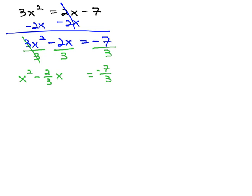Now, we're all set up to complete the square, and the way we complete the square is we have to find half of b and square that answer. Well, in this problem b, that middle number is negative 2 thirds, the fraction.